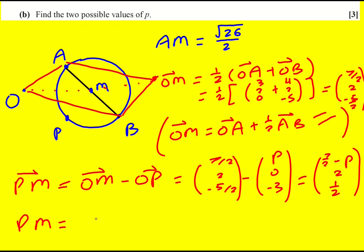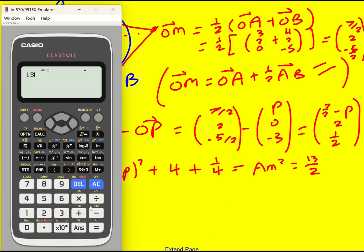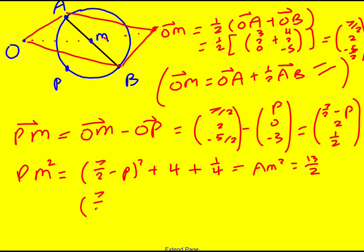And therefore, PM is seven over two minus p squared, plus two squared, which is four, plus a half squared, which is a quarter. And that's equal to AM squared, which is going to be 26 over four, or 13 over two. So I've written an equation involving p, and I just need to solve it. I'm not going to expand the bracket. In fact, I don't need to. So 13 over two minus a quarter minus four, gives nine over four. Seven over two minus p squared is equal to nine over four.